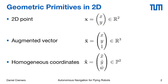As you all know, we can represent 2D points as a 2D vector which we will denote by a bold face x. This vector has two components x and y which represent the coordinates of this 2D point. We can also represent the same 2D point by what's called an augmented vector. This is a 3D vector where the first two components represent the coordinates of this point, and the third component is just one. This vector we will denote by x-bar.